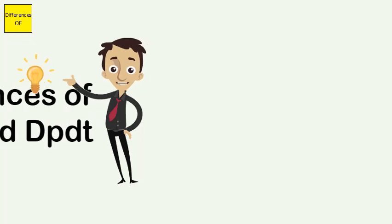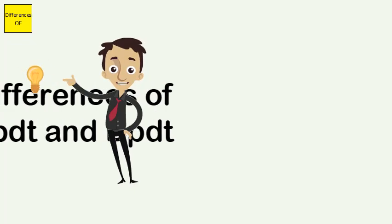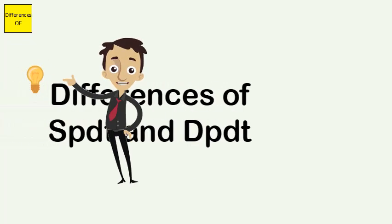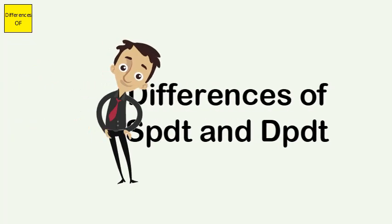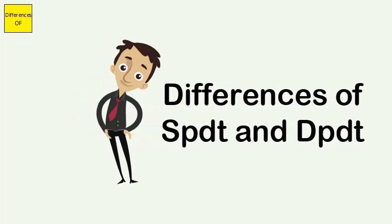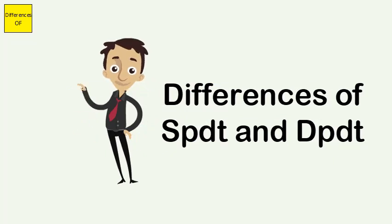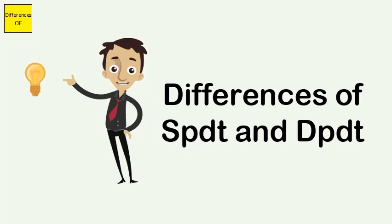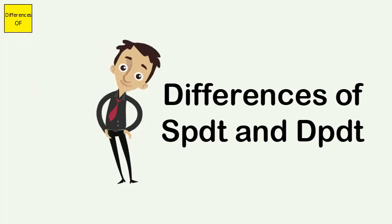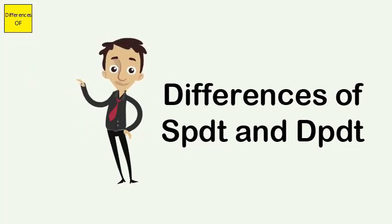The difference between SPDT and DPDT: SPDT stands for Single Pole Double Throw, DPDT stands for Double Pole Double Throw. SPDT energizes only one switch at a time, while DPDT energizes two switches at a time.